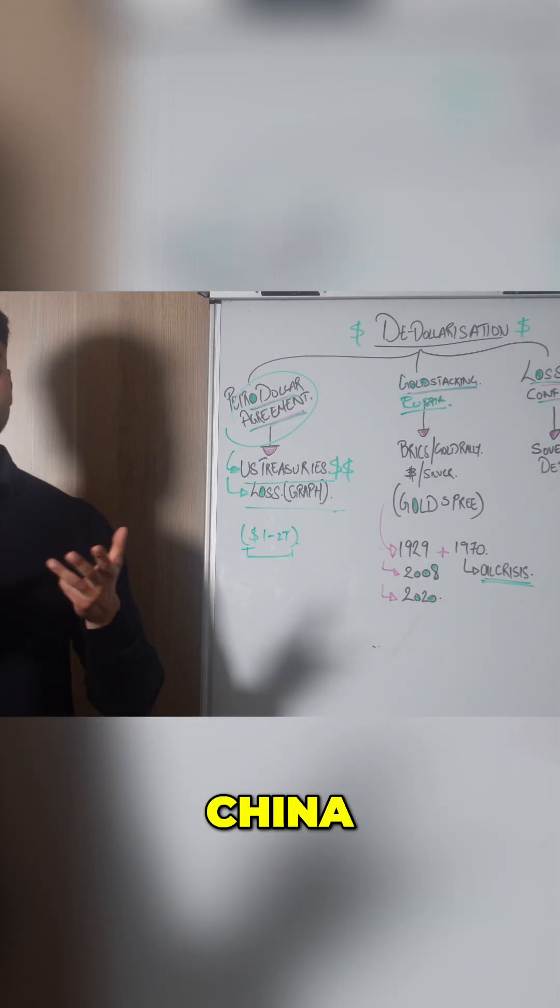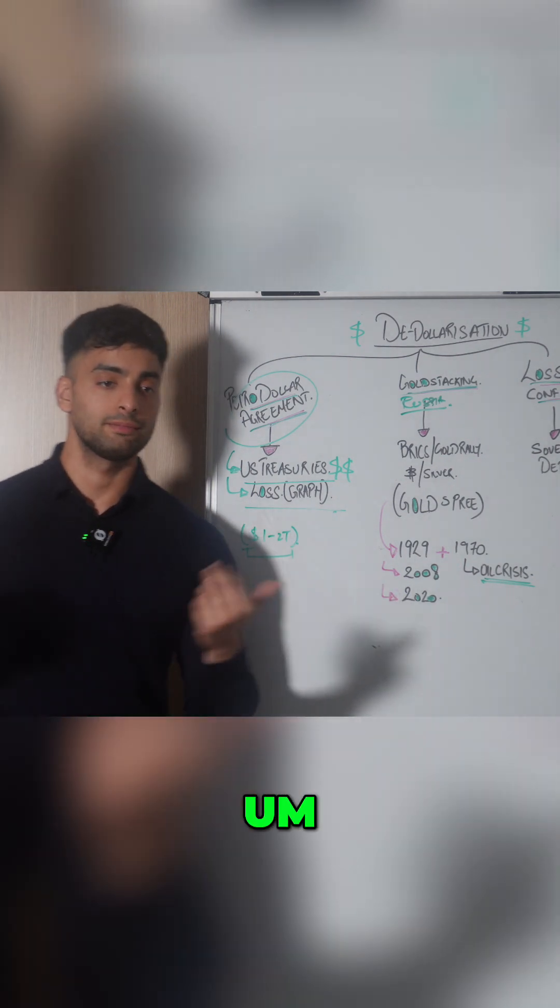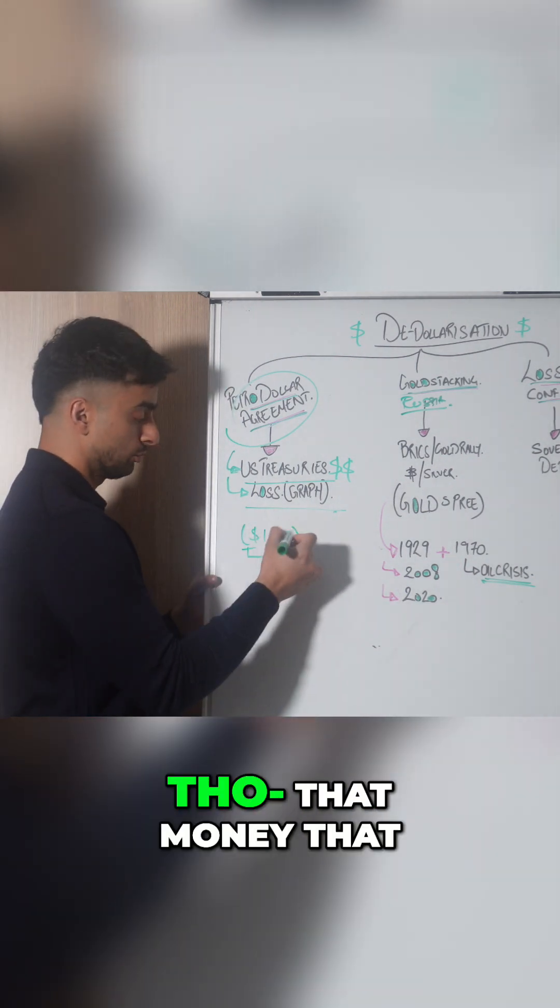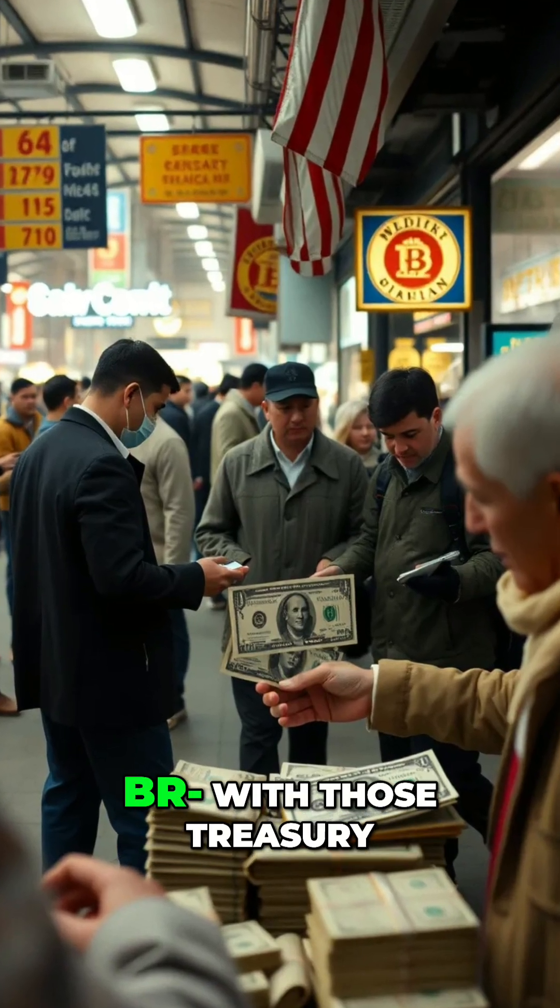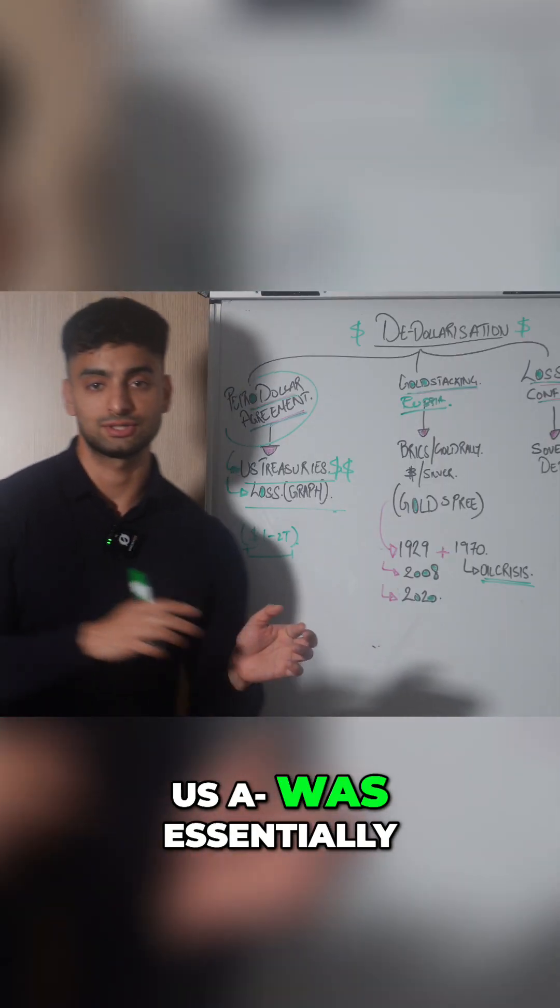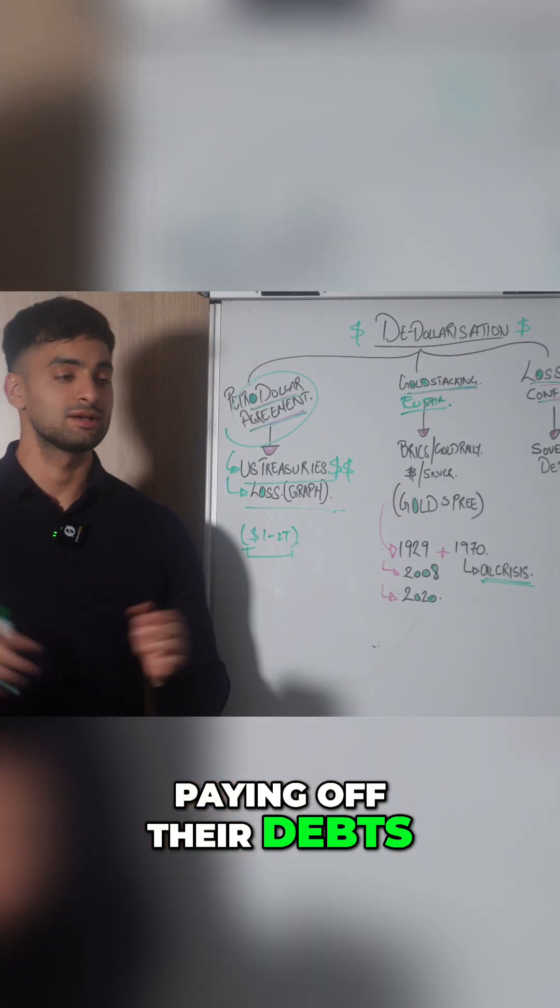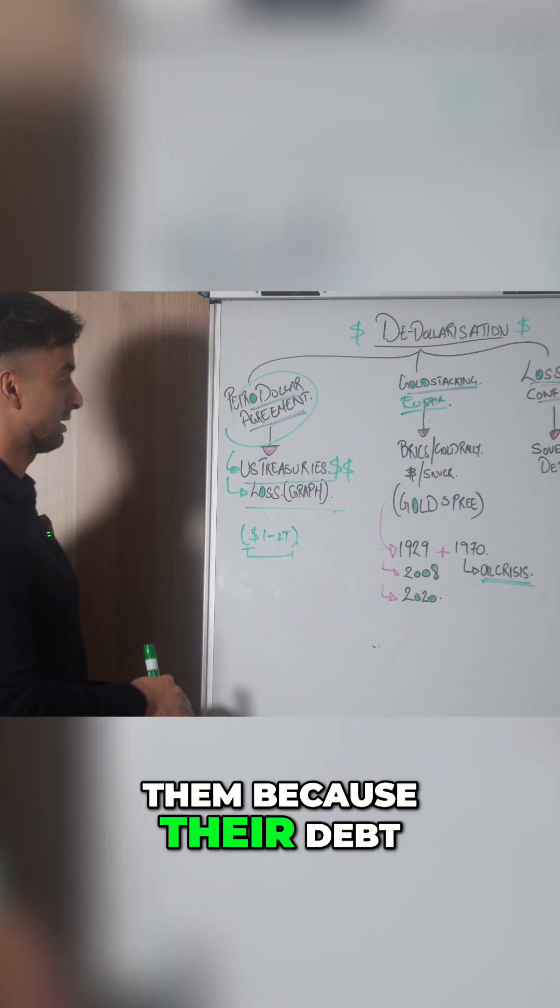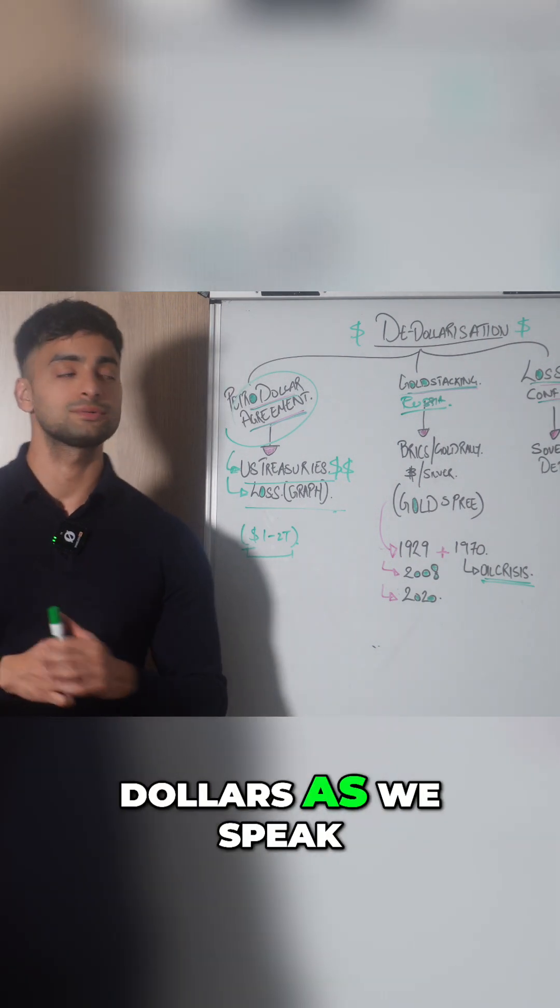Some of them being Japan, China, India, Russia. That money that was coming through from those treasury U.S. bills, the U.S. was essentially paying off their debts, which was not helping them because the debt is still 37 trillion dollars as we speak.